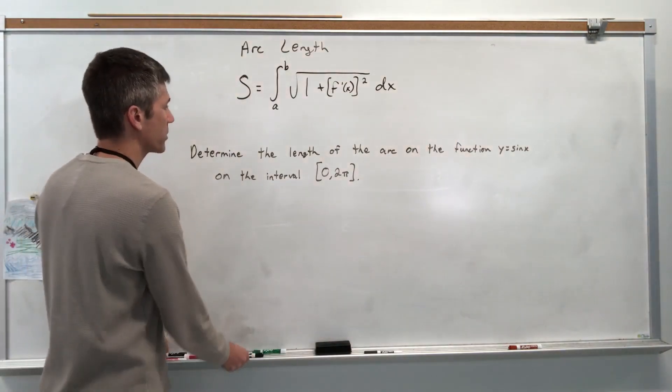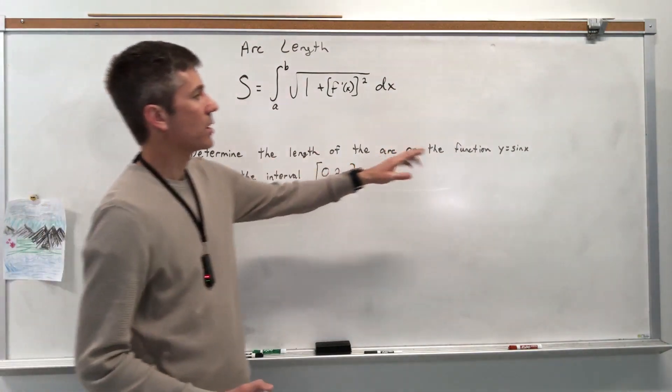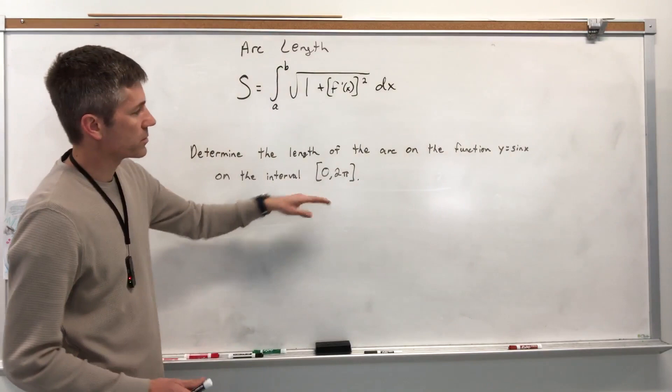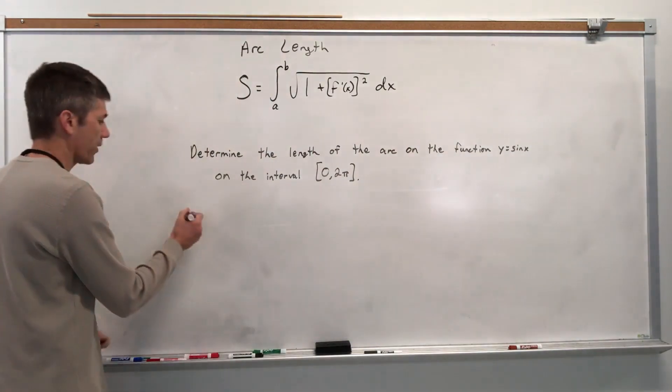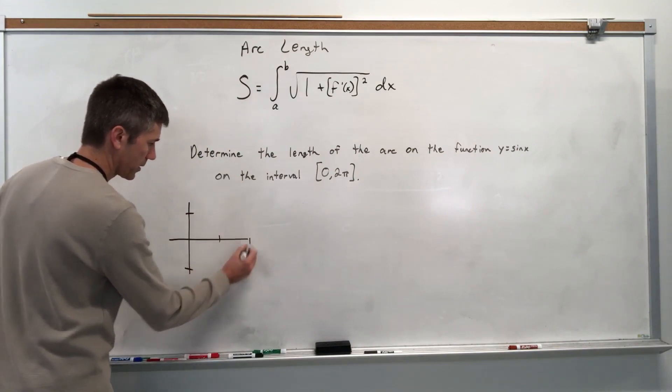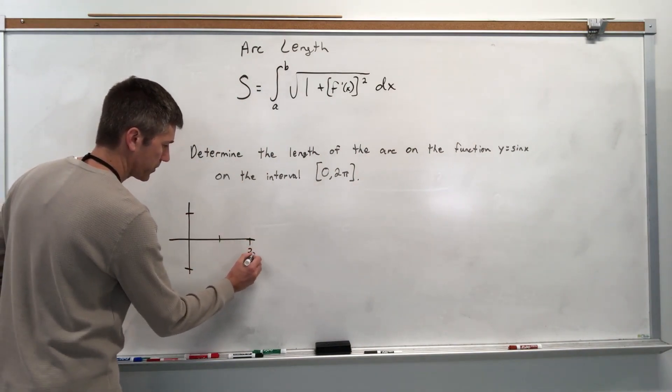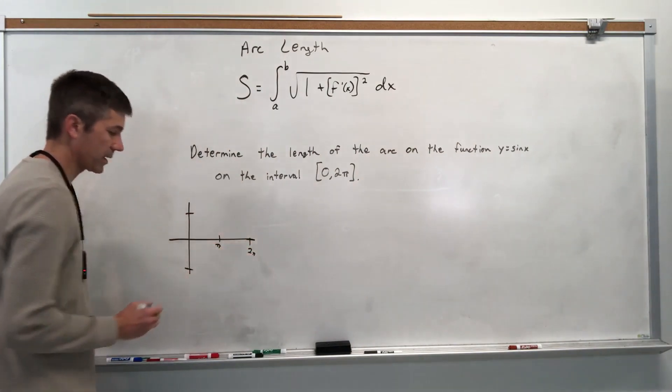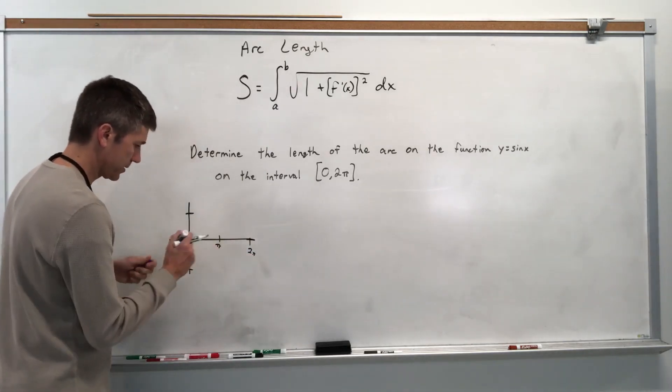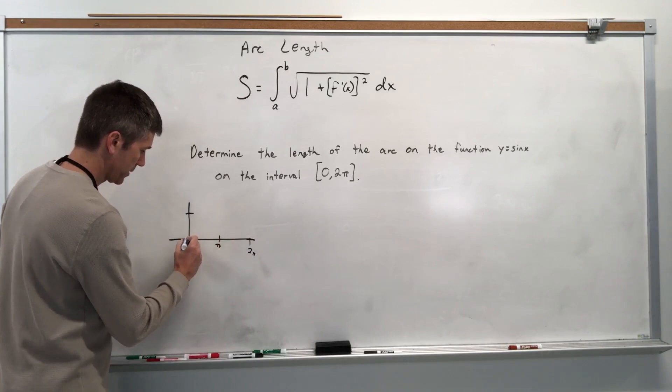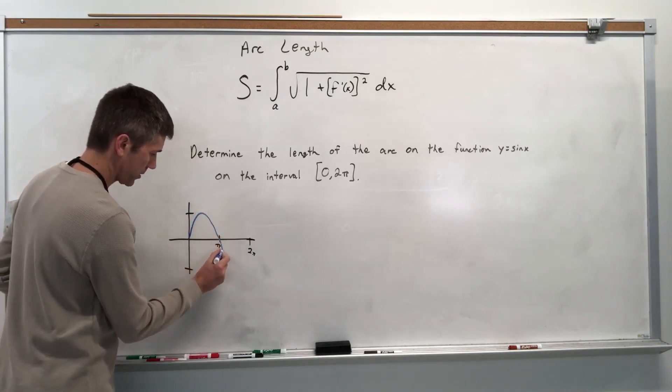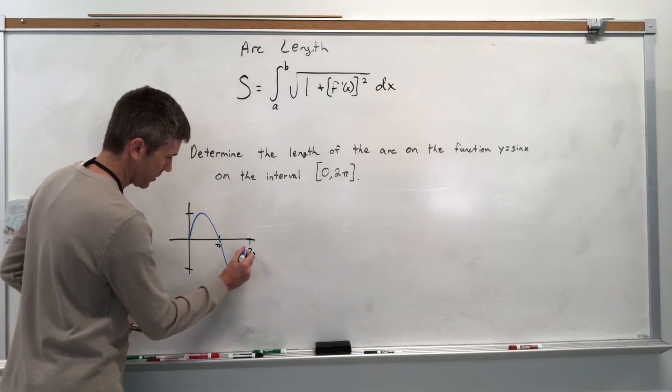So here's the first question. Determine the length of the arc of the function y equals sine x on the interval from 0 to 2 pi. So if you graphed it by hand, which we can do, we'll say that this is 2 pi, which makes this 1 pi. And the graph of sine, let's switch colors here, is going to look like this. It's going to go up, cross at pi, and then back down.